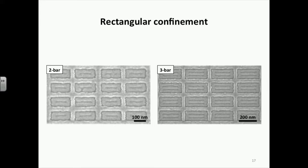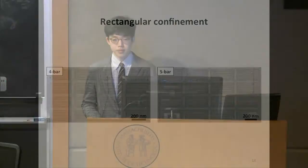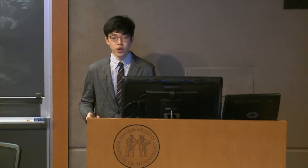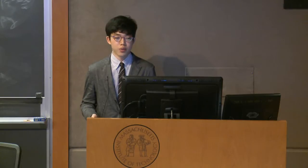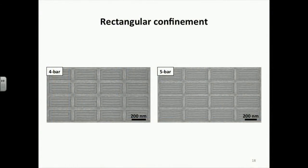We experimentally verified this. For a confinement size of 200 nanometers, we observed two-bar structures, simply a rectangular ring. As the confinement size increased, an additional bar formed in the middle, giving three-bar structures. Unlike square confinement, the bar-shaped structures were aligned in the same direction — parallel to the longer side, in the horizontal direction. As we increased the size further, we observed four-bar structures (left SEM image) and five-bar structures (right SEM image), both perfectly aligned horizontally.